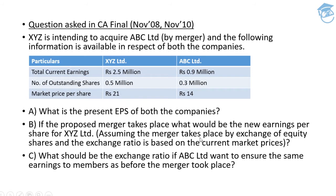So the number of outstanding shares post-merger is 0.7 million. Now the current earnings for XYZ Limited are 2.5 million and for ABC 0.9 million, totalling 3.4 million. This 3.4 million divided by 0.7 million gives the new post-merger EPS for XYZ Limited.